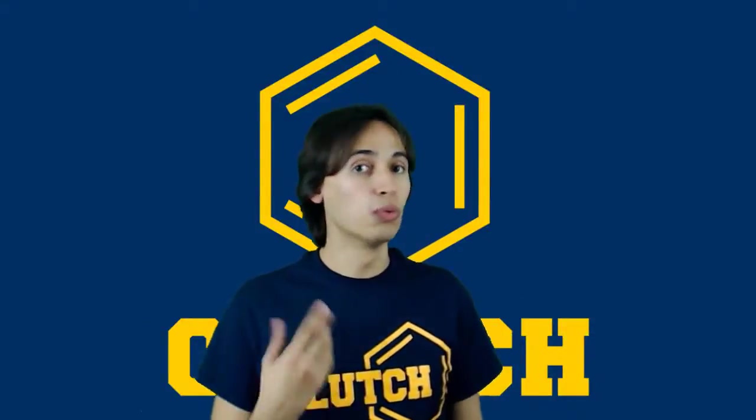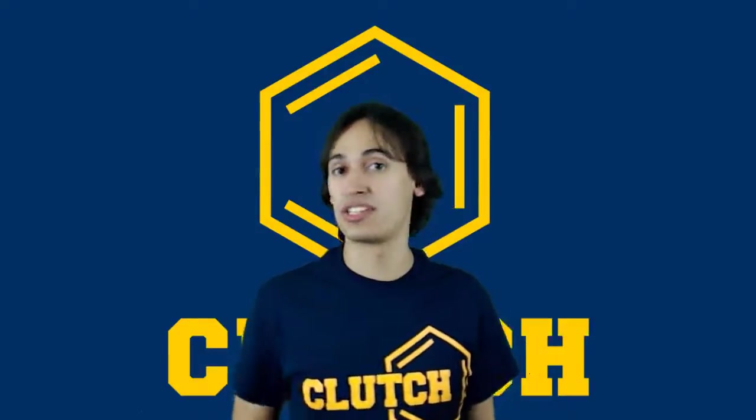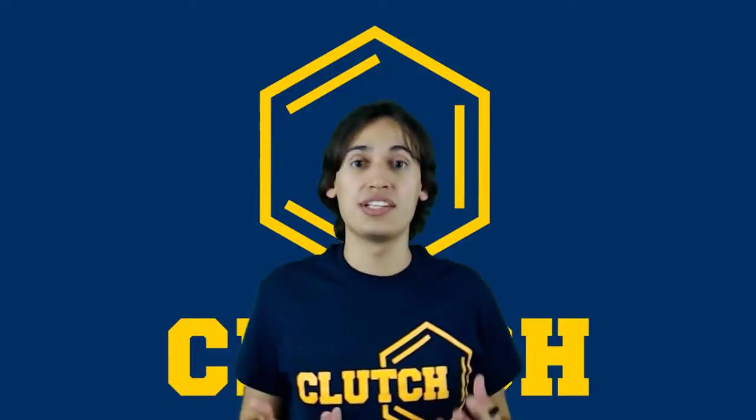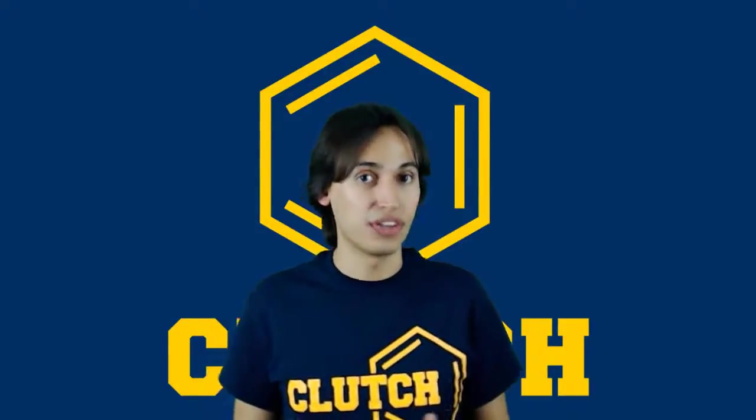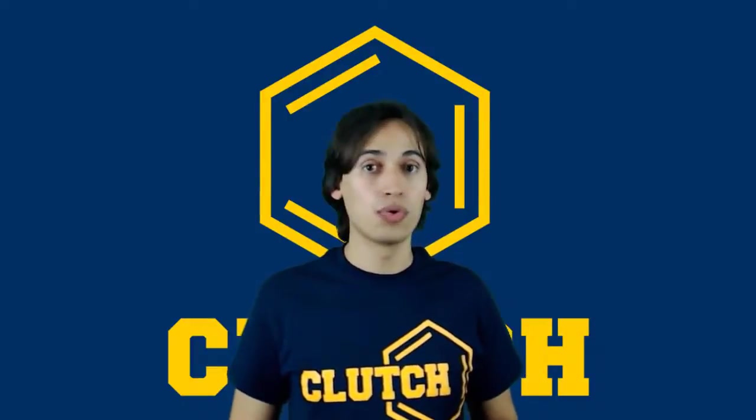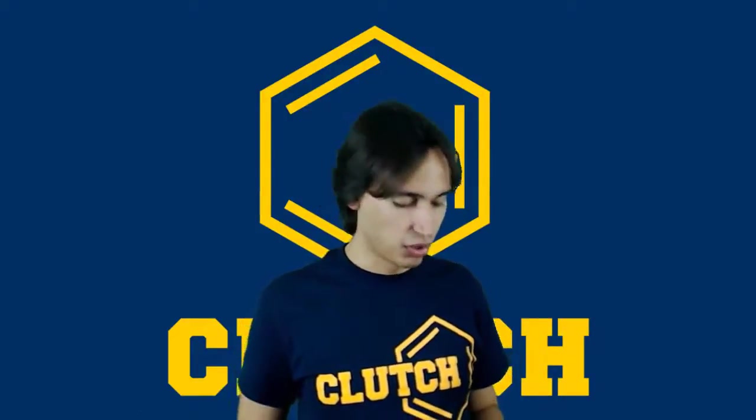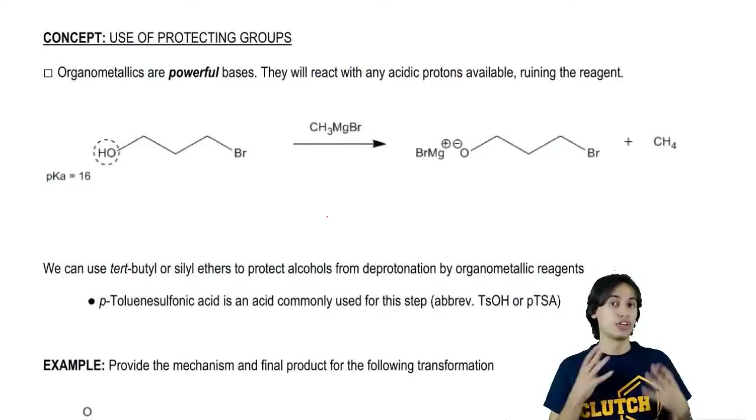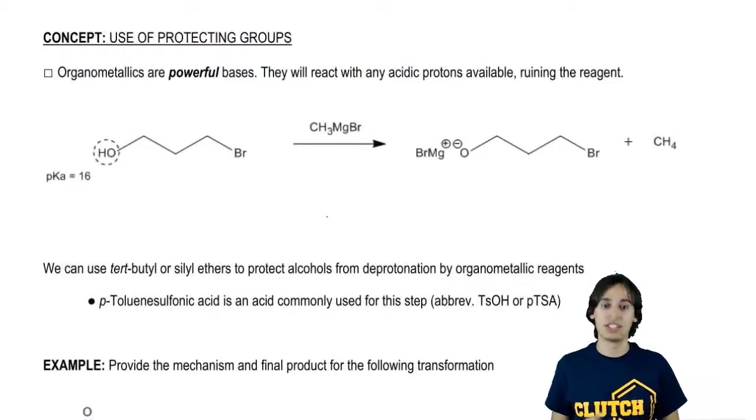Now that we understand organometallics a little bit better, hopefully you're aware of one of the major limitations that they have. That limitation is that they tend to cross-react with acidic hydrogens. So how do we prevent that from happening? Let's talk about a strategy called protecting groups.